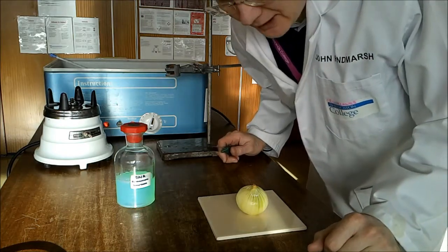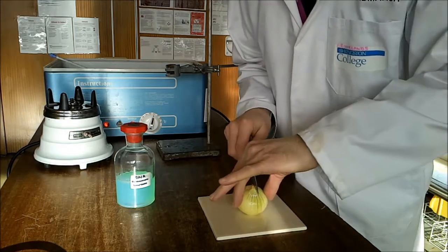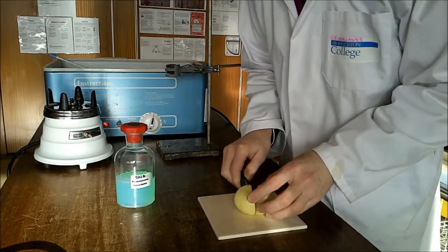This is how to extract DNA from onion. To start with, take some onion and slice it finely.